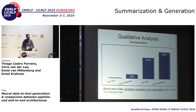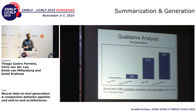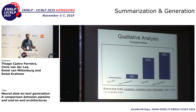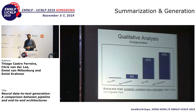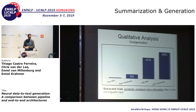A similar thing we see for over-generation — this is hallucination, where the system tries to include information not really in the data. The pipeline GRU has virtually no hallucinations. The pipeline transformer has a little at 8%. But for the end-to-end GRU and transformer, hallucination goes up to almost 50%, which is a lot more.